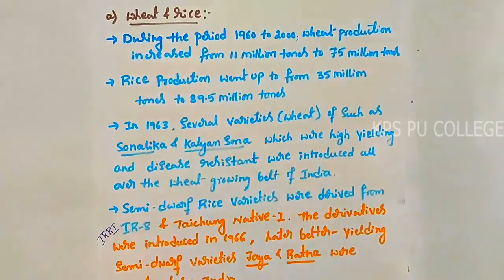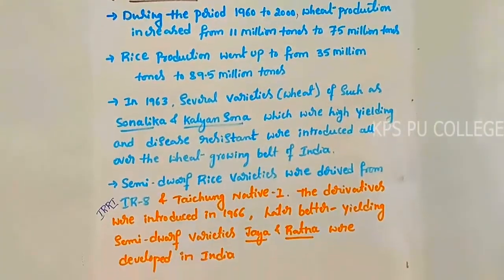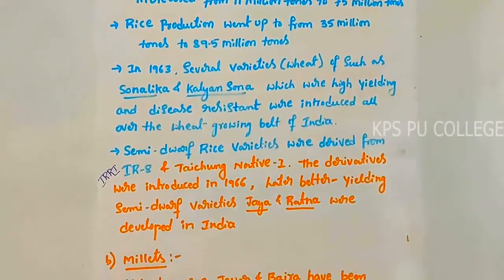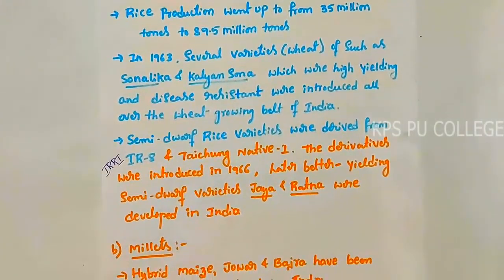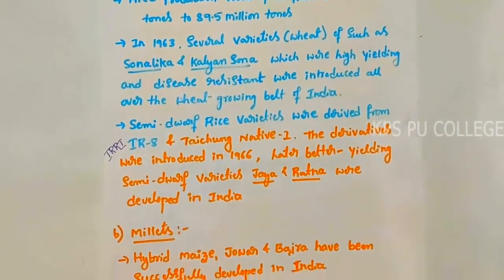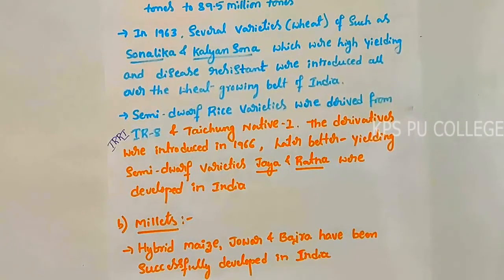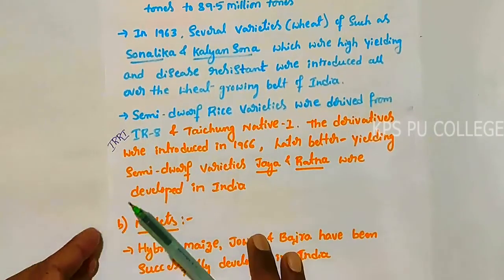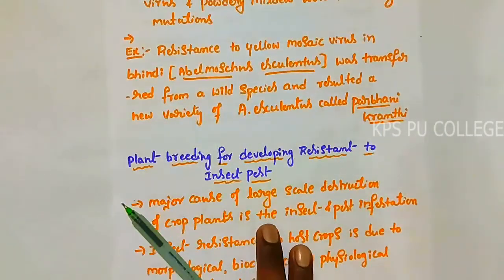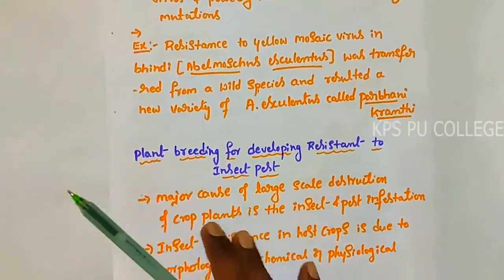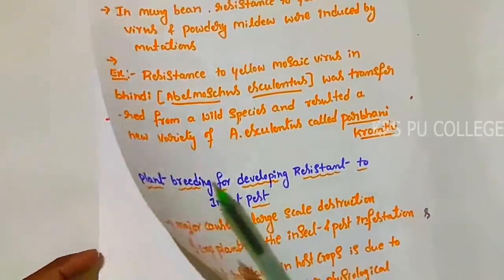The second topic is millet. Hybrid maize, jowar, and bajra have been successfully developed in India. The third topic is sugarcane.